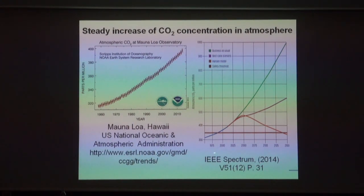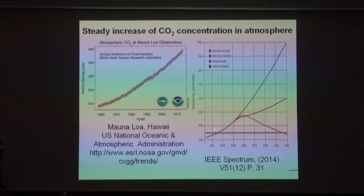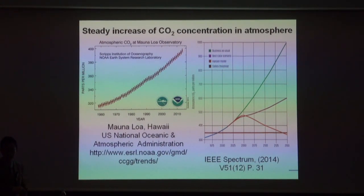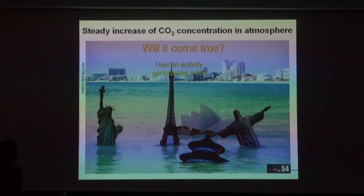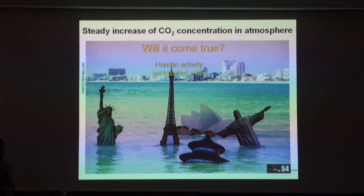Recent research published in IEEE Spectrum shows three curves. One represents continuing the current rate of economic growth, which leads to very high CO2 levels. If you decrease economic growth and take action, CO2 decreases but the economy suffers greatly. If we take action simultaneously while maintaining reasonable economic growth, we get a better result. But since the safety threshold is 350 ppm and we are already above it, we need to take action—otherwise, as someone said, you'd better learn how to swim.